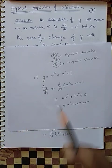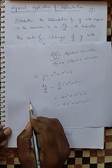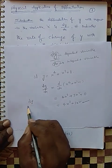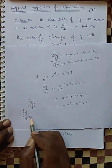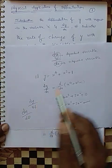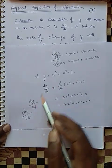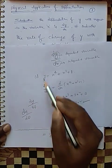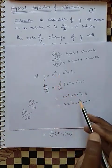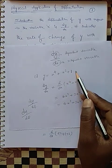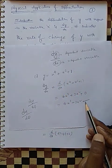We can also apply differentiation with respect to other variables. We can find dy/dt or dy/dθ — differentiating y with respect to t, or differentiating y with respect to θ. Here what we did is differentiate with respect to x, so we get this answer.